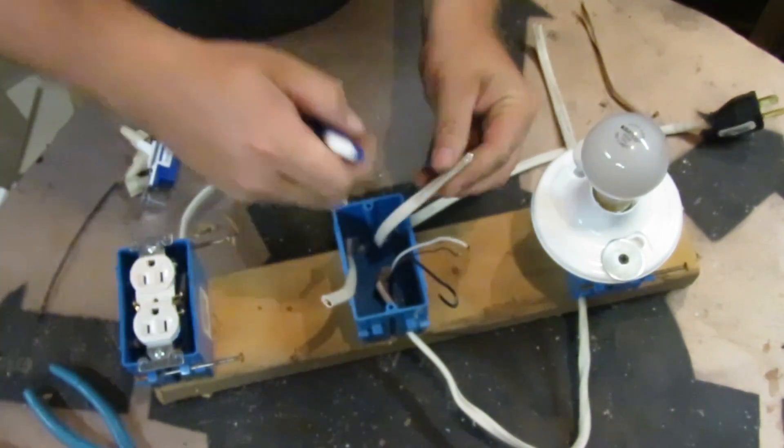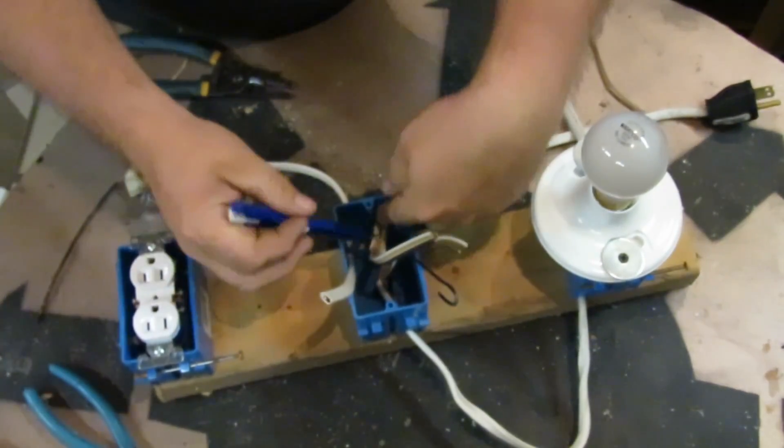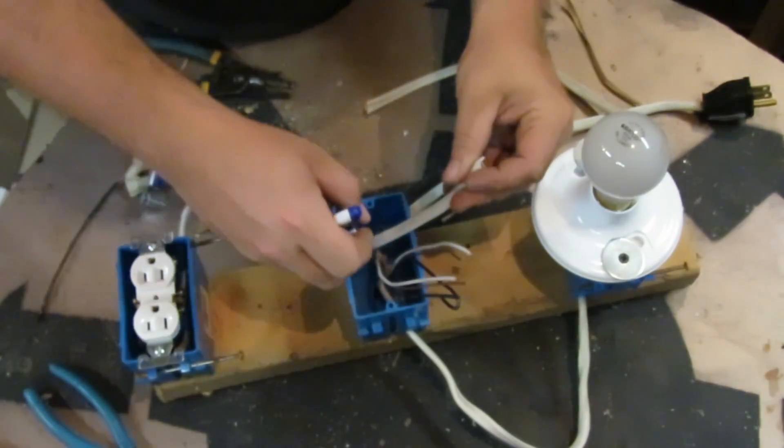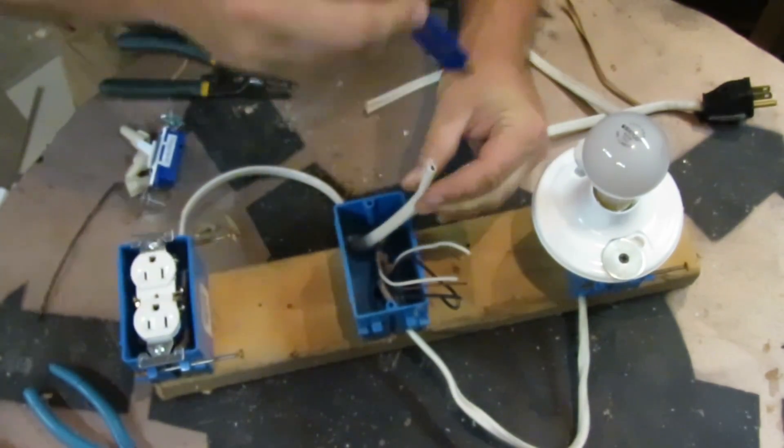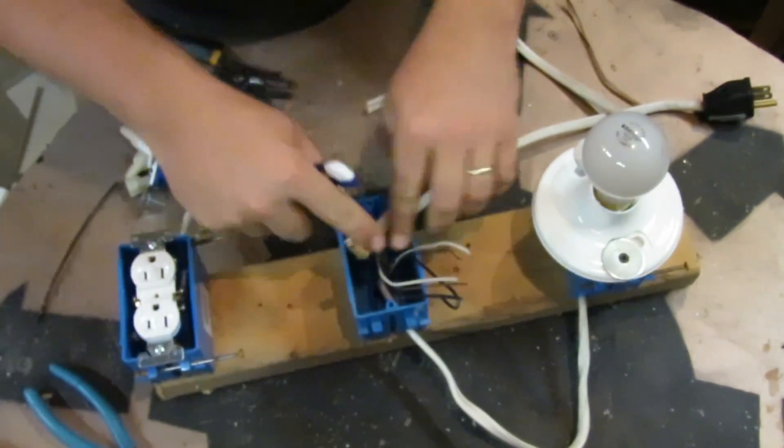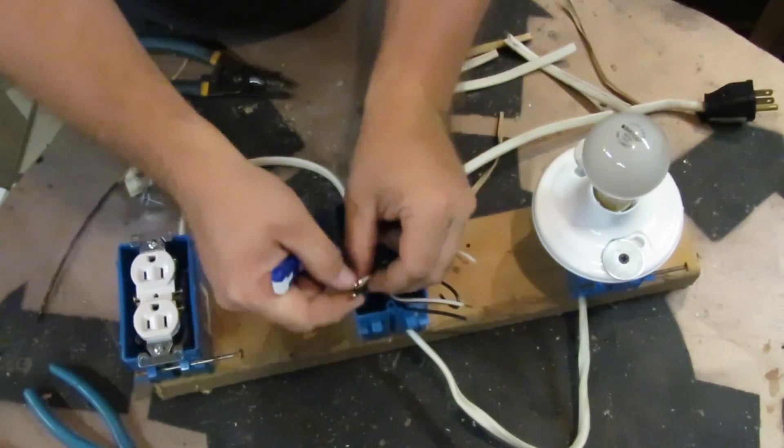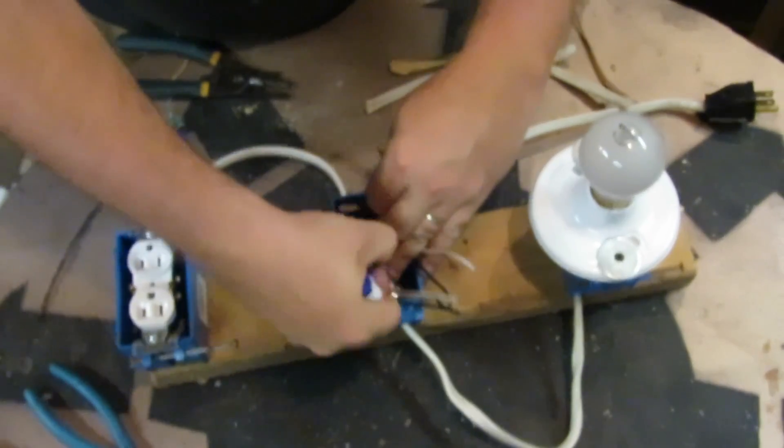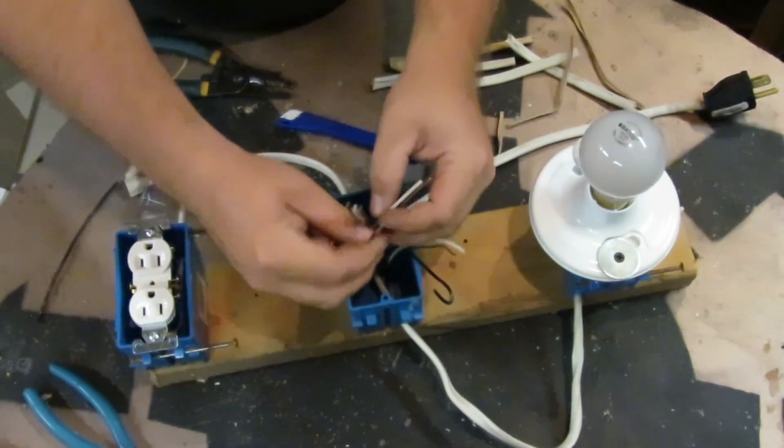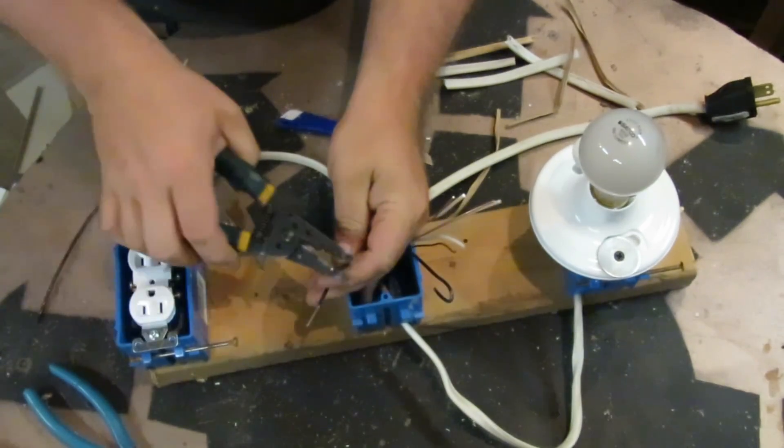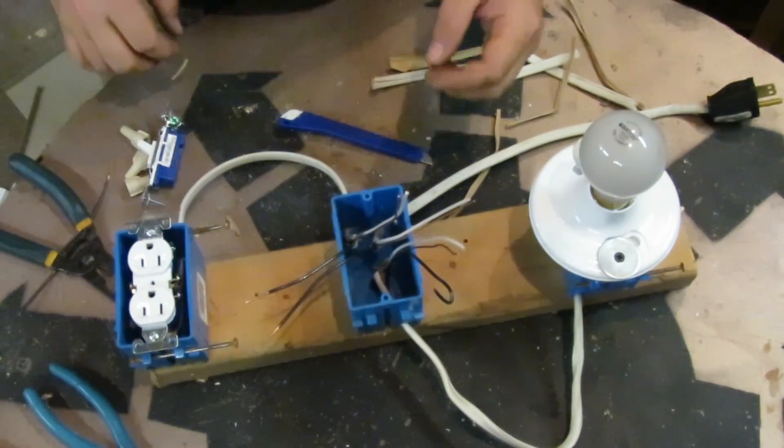You want to make sure you keep that switch line black wire separated from your hot wires. So I put a little loop on it to mark it for now, so I don't confuse it with these other two black wires. Now that all that's done, you want to strip off the ends of your two hot wires to mark them as hots.